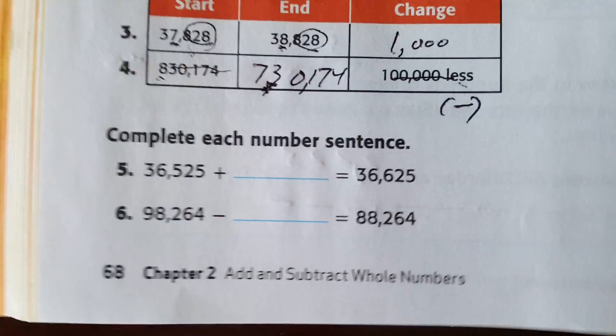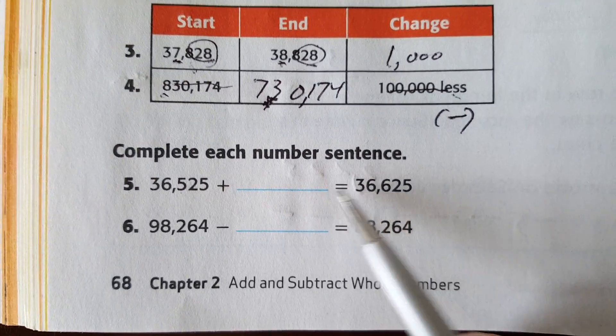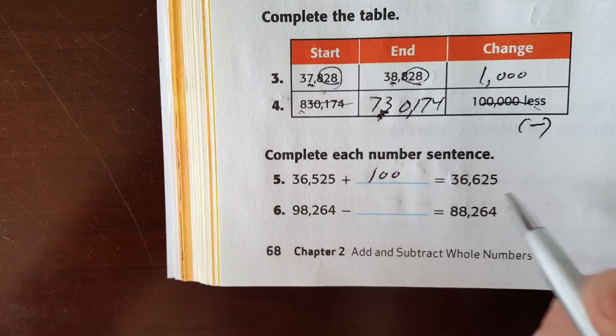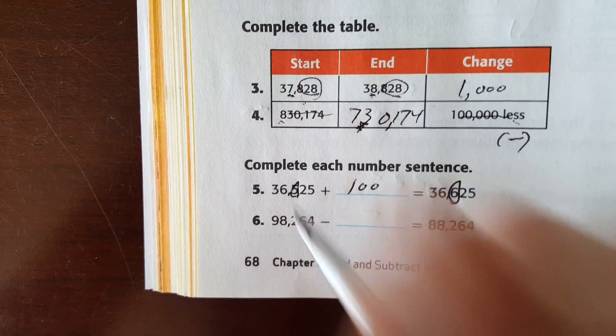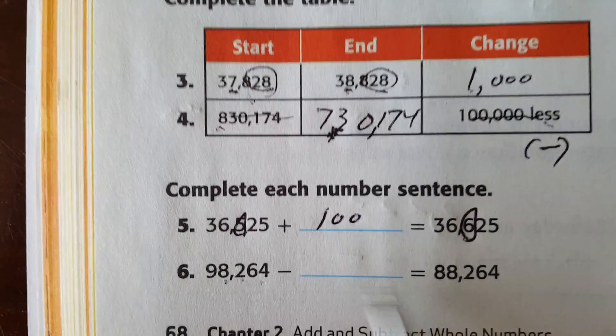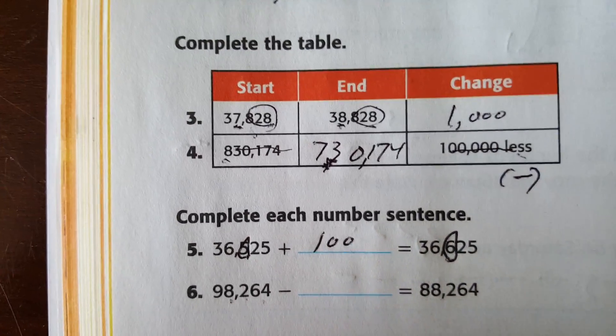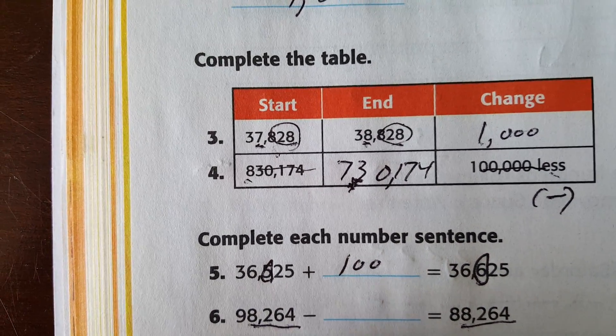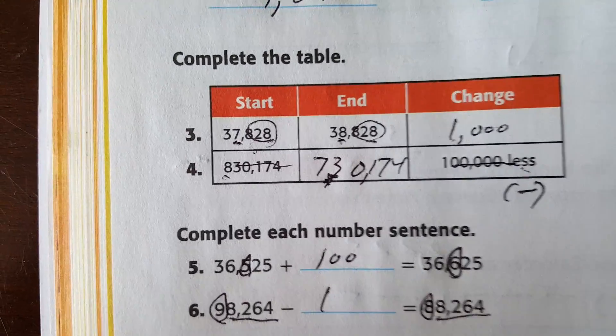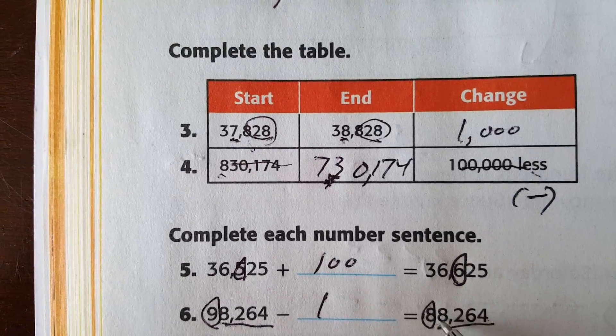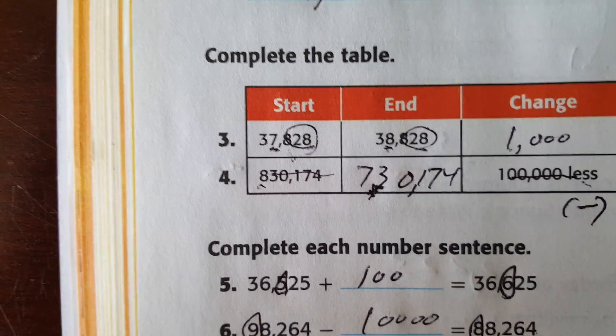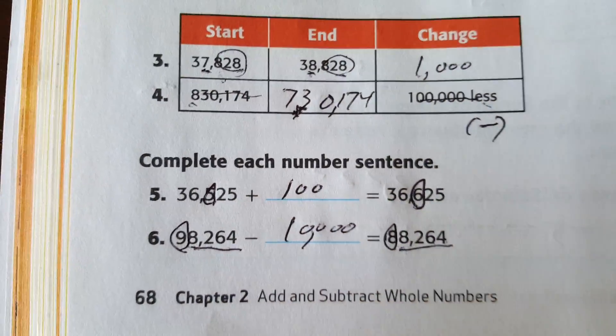Complete each number sentence. So whatever's over here needs to add over here to get over there. So to get this, you have to add 100. Only number that changed was that. Look at this. 98264 to 88264. The only number that is changing is this 9. Goes from 9 to 8. It went down by 1. How many zeros are left? Just count them. 1, 2, 3, 4. So it went down 10,000.